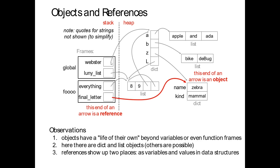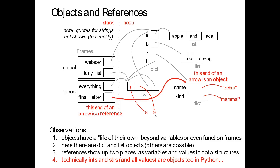All variables are references — they point to some object on the heap. Pieces of data on the heap can also be references, like a dictionary key pointing to a list. Technically, ints like 8 and 9 are objects, and so are all strings. Even though something like 'ada' doesn't technically have an arrow drawn to it, it should be a reference to that string. Because this makes a rather complicated picture, for integers and strings we often just put them in the box rather than drawing an arrow.